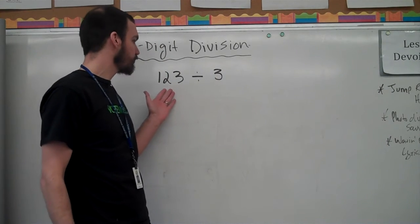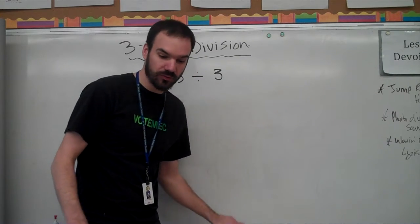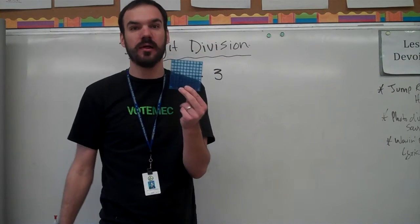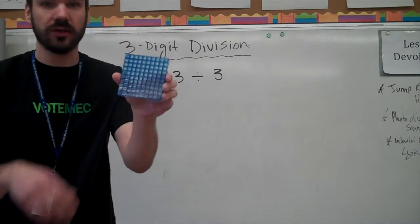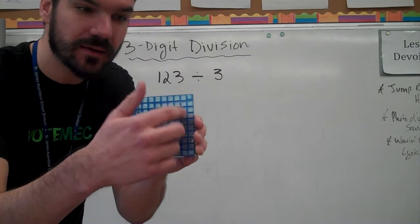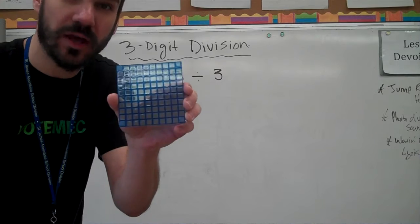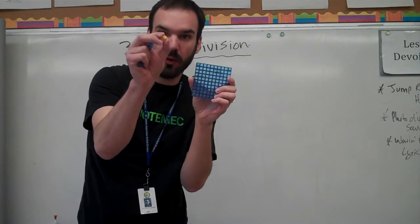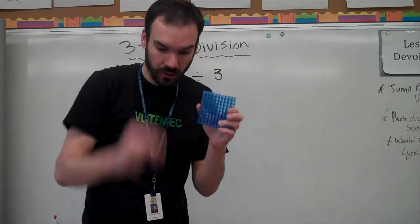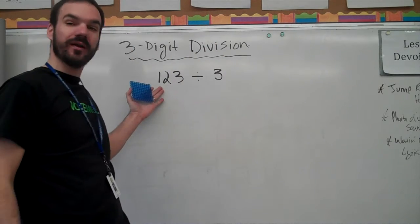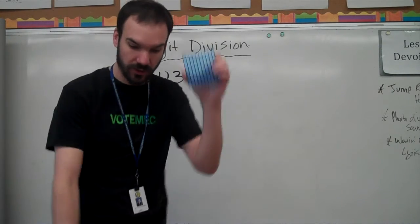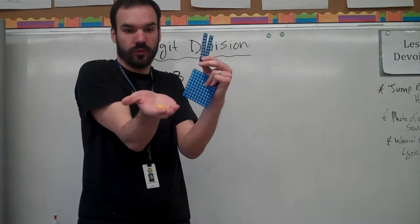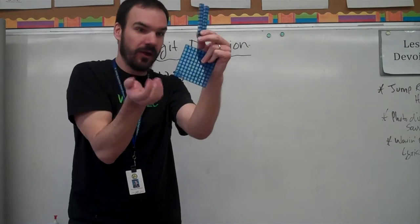So we have 123 divided by 3. One strategy that we use in the class is we use base 10 blocks. Here's one. This is a base 10 block. This is 100. You can see that there's tiny units, hopefully this picks up on the camera. There's tiny little units all in here. There's rows of 10, and there's 10 rows of 10. So this is 100. Here's one 10. And then here is one unit, which is basically 1. So if I want to represent 123 in base 10, here's my 100, here are my two tens or my 20, and here are three ones. So I have 123 in my hands.